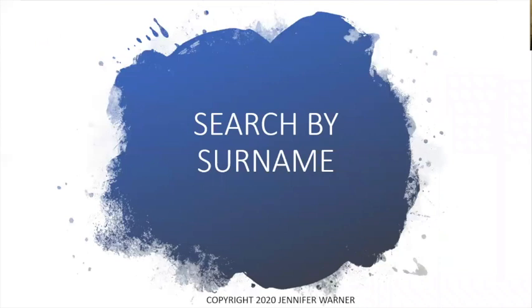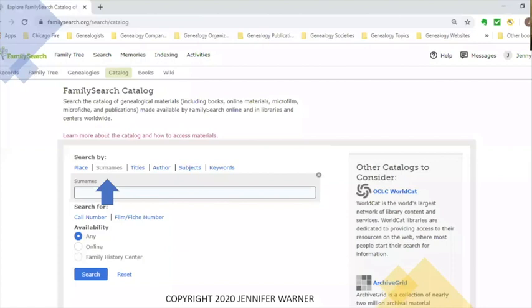The next thing is to search by surname — when you want to look up a family name to see what records are out there for that particular surname. Some surnames will have a lot of information, like Smith, James, Thomas, or Taylor. Others like Fuller or Mueller may not have as many, depending on nationality. You'll find a lot of English, Scottish, and some German names, though not all German names appear frequently in FamilySearch.